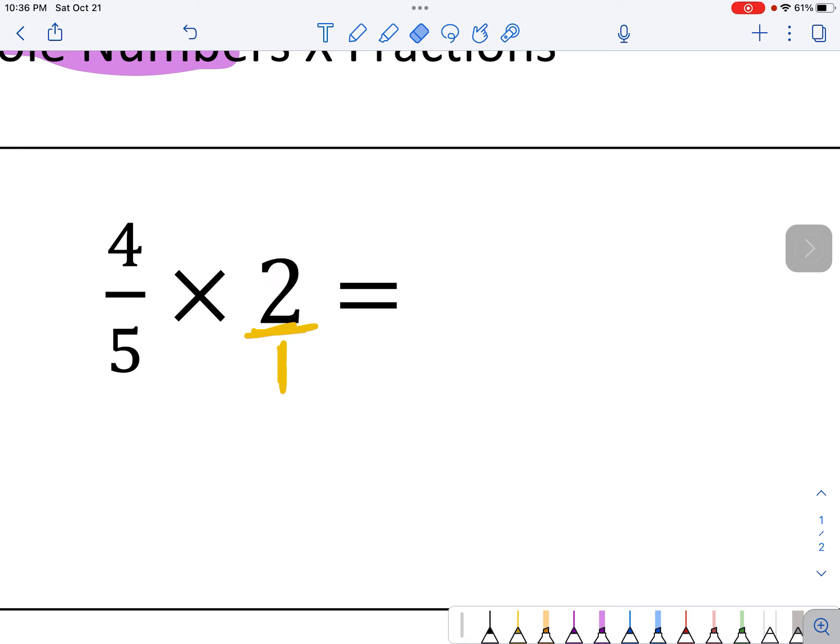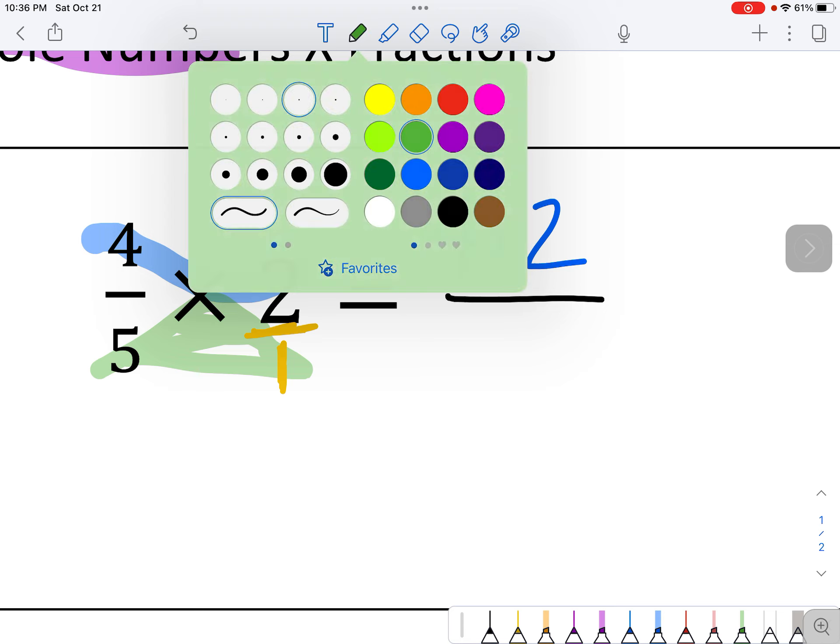All right, so here we go. Now we can multiply across. On the top, we have 4 times 2. So for our numerator, 4 times 2. And on the bottom, we have 5 times 1. Write that in, 5 times 1.